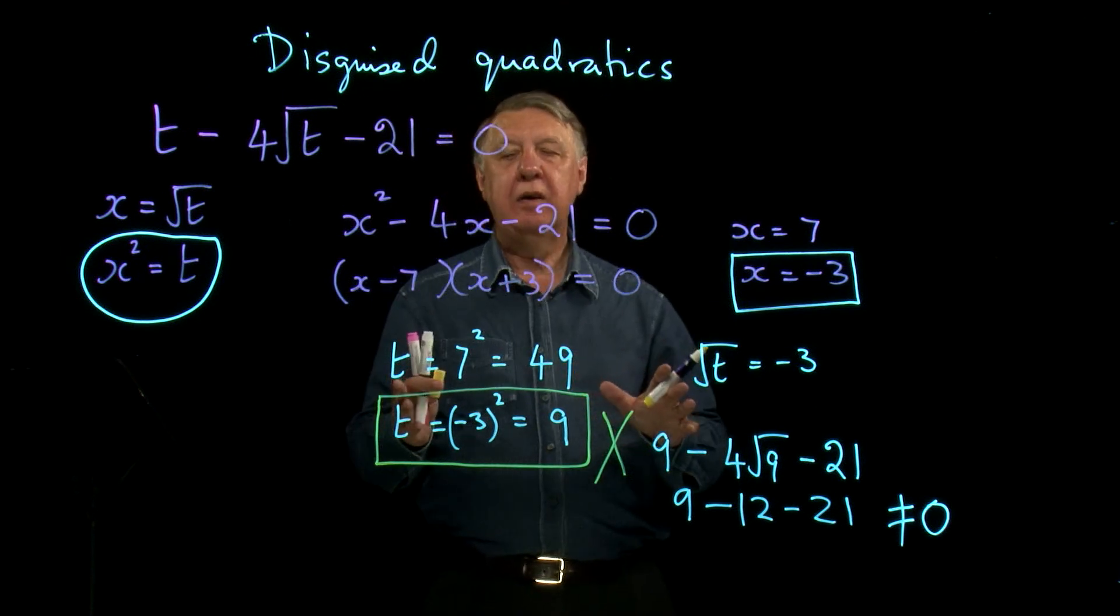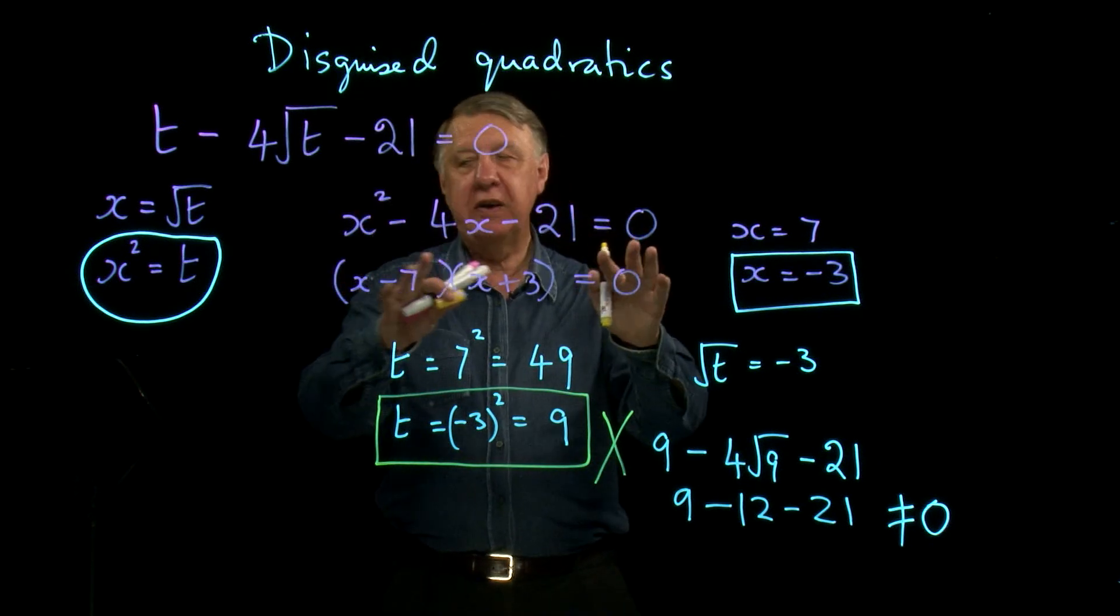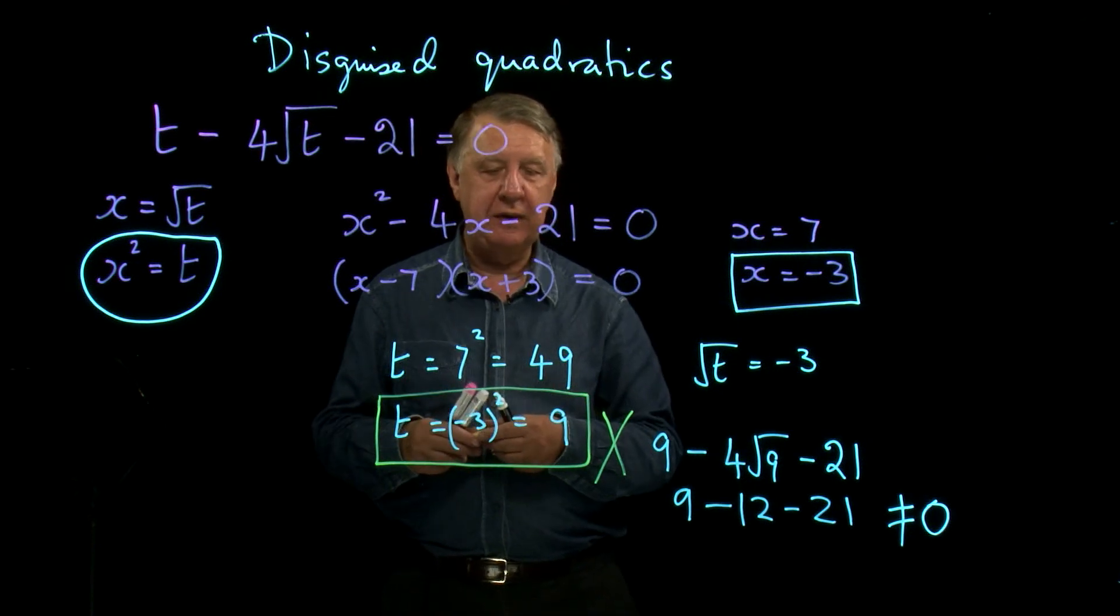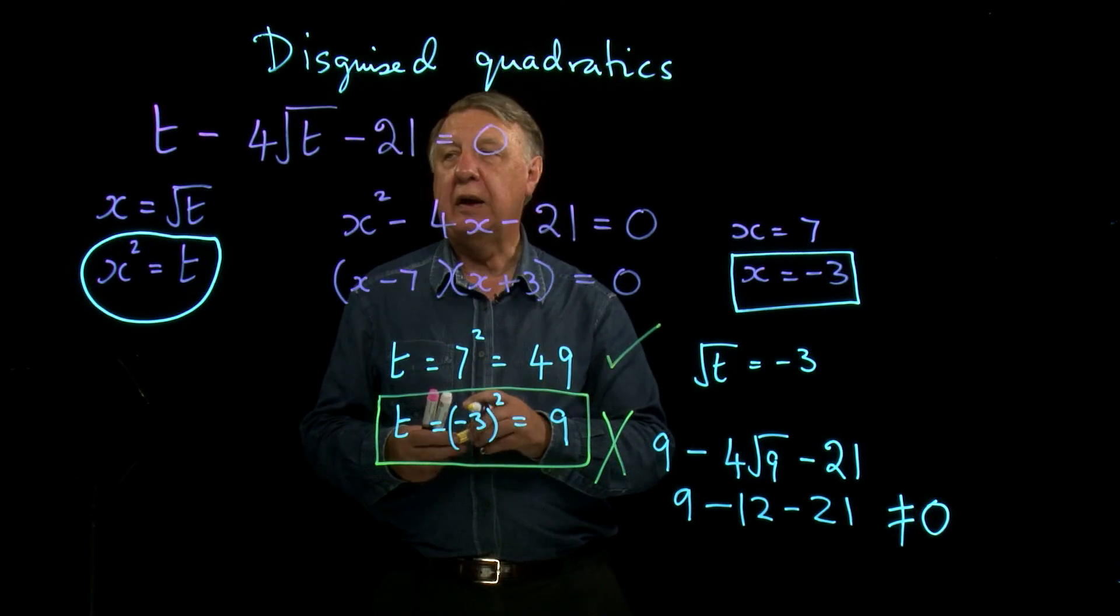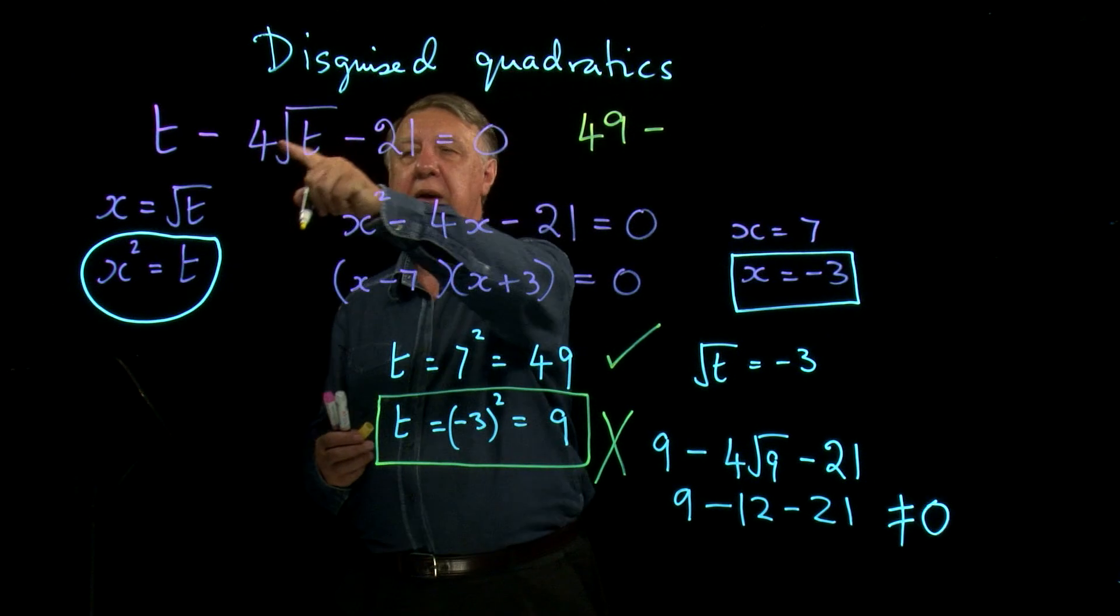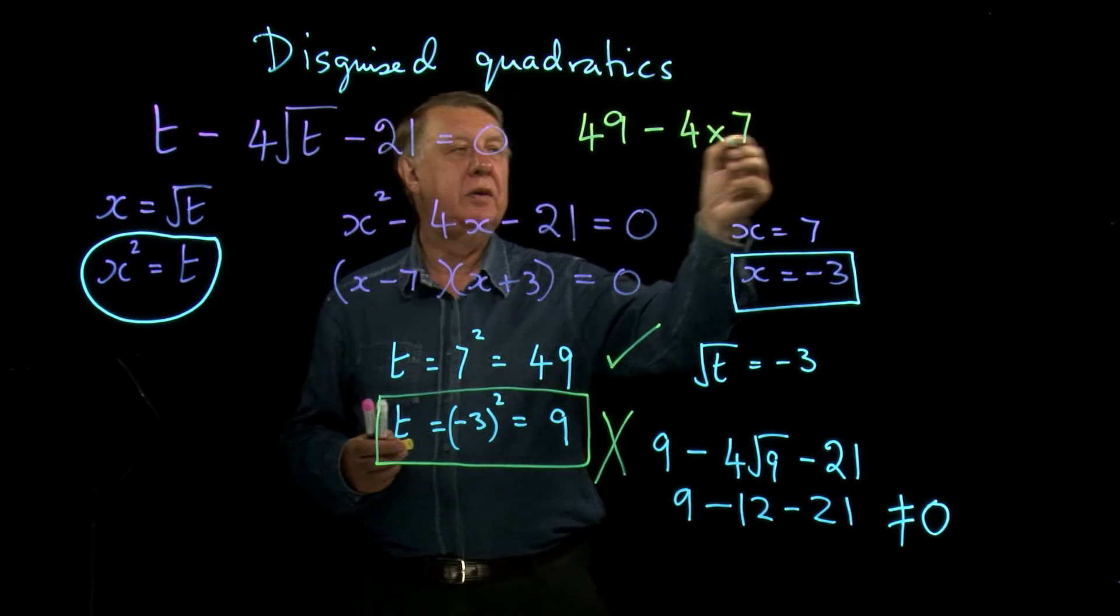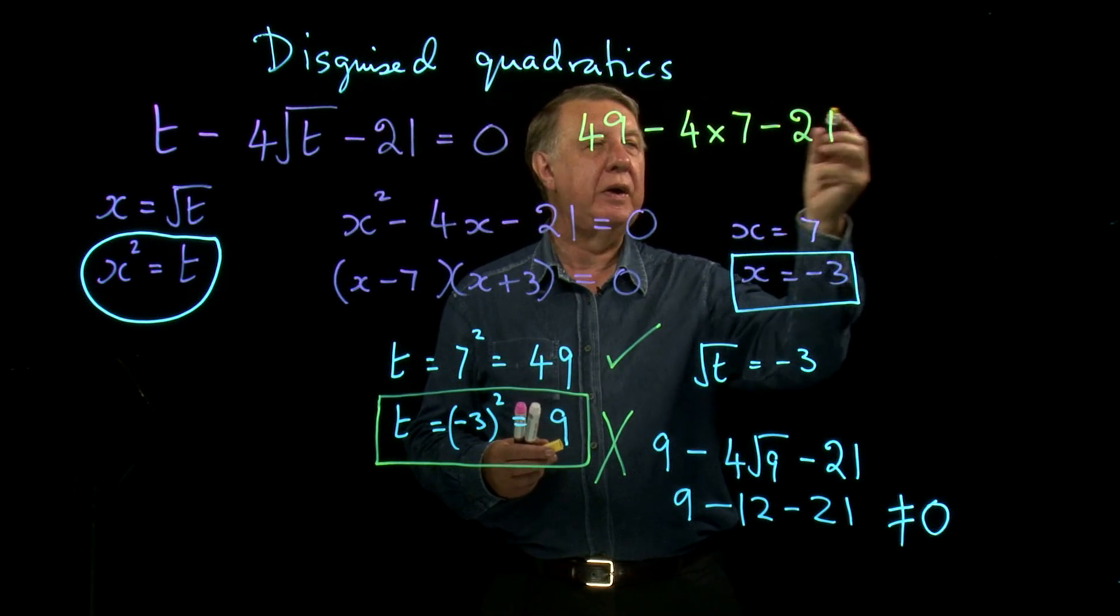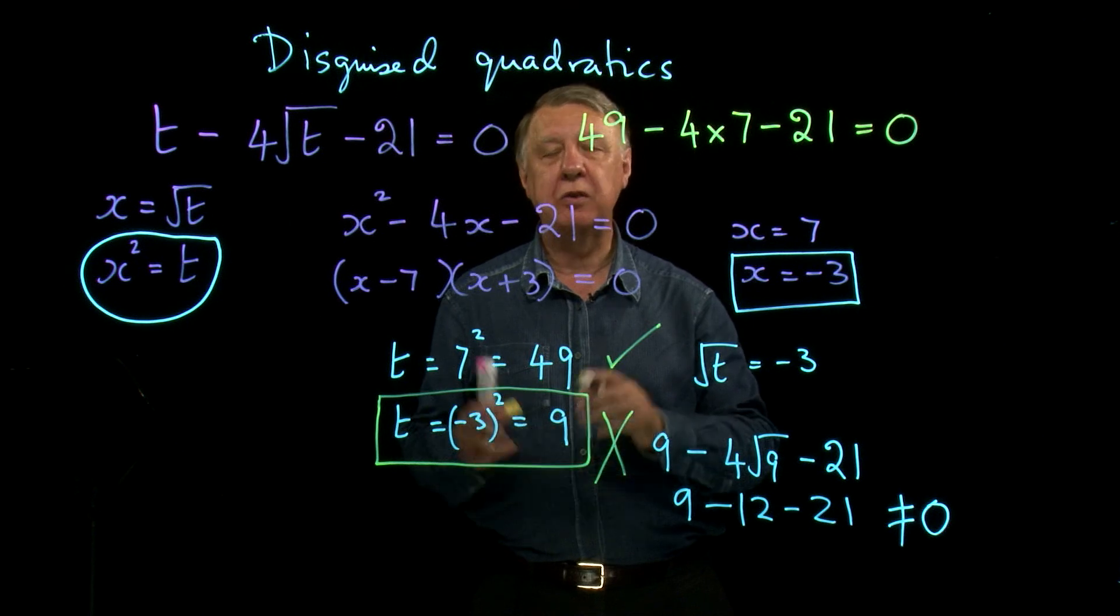So, again, it's the last bit that's really tricky. Don't just get to the quadratic, solve it, and just, without thinking, put your answers back into the original substitution. And, I'm afraid they will try and catch you out like this. And, you have to be aware of what the problems are. So, the only solution to my problem here is t equals 49. And, if we just want to check that, 49 take away 4 times the square root of 49, which is 7, take away 21. And, that's 0, isn't it, because 49 take away 28 is 21, take away 21 is 0. So, indeed, our only solution is t equals 49. So, just be careful with this topic.